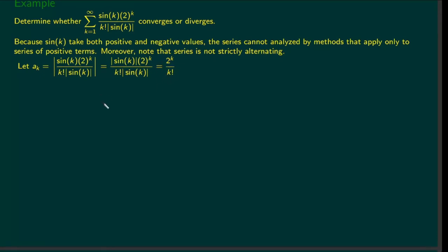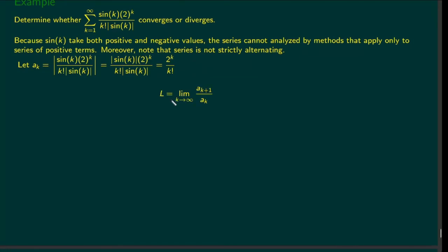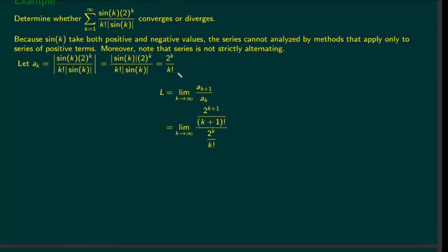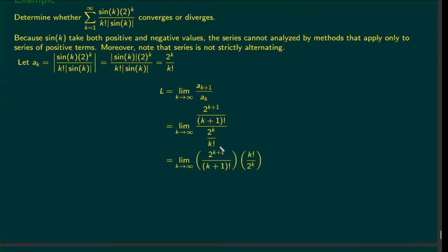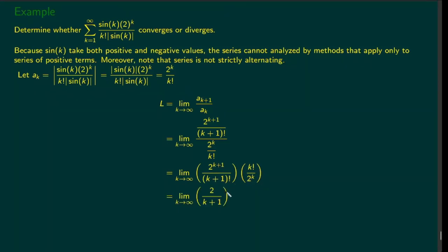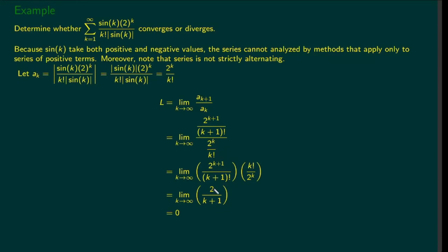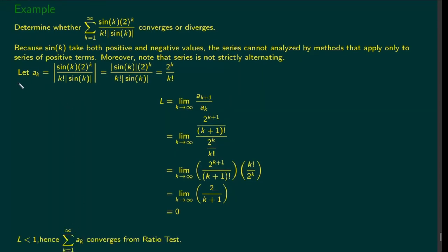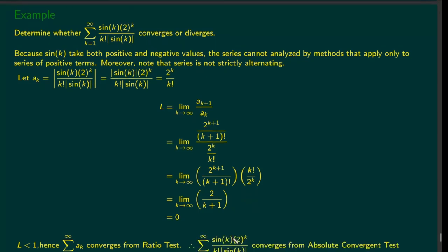Using the ratio test, we take the limit as k goes to infinity of a_(k+1) over a_k. Applying the formula for a_k at k+1 and k and flipping and multiplying, we can cancel terms: the (k+1) factorial absorbs the k factorial, and the 2k terms cancel with the top. We get 2 over (k+1), which goes to 0 as k goes to infinity. From the ratio test, the series with a_k converges. Since this is the absolute value series, by the absolute value convergence test, the original series also converges.